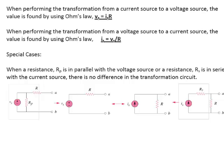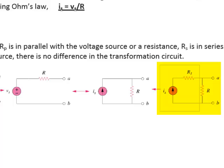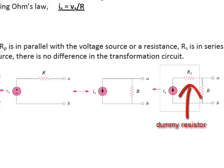There's also a dummy resistor for the current source case. If you look at the bottom right circuit, RS is in series with IS. RS is called a dummy resistor. The current is the same for RS and the current source, so it can be removed. When I do the source transformation, RS is not part of that configuration.